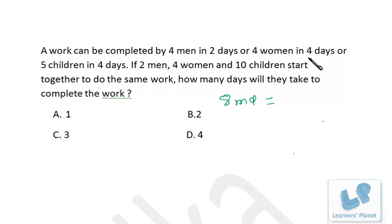That equals 4 women for 4 days. That means 4 women taking 4 days means 1 woman will take 16 days. So the work is either 8 men-days or 16 women-days, which means women are less efficient.